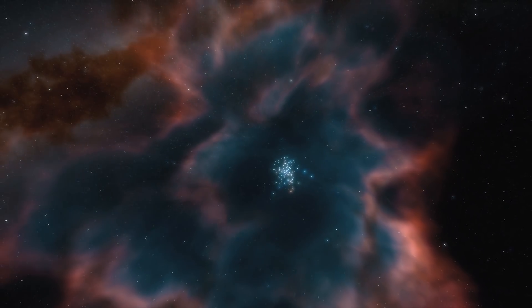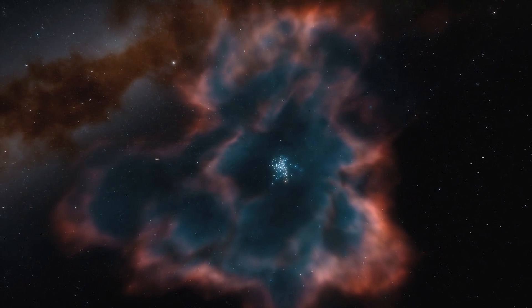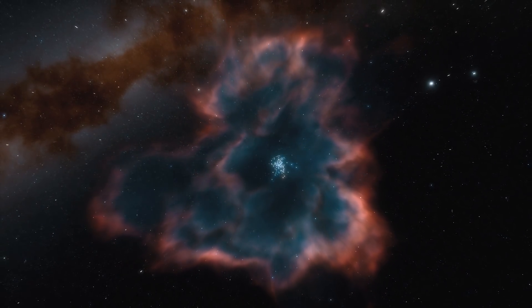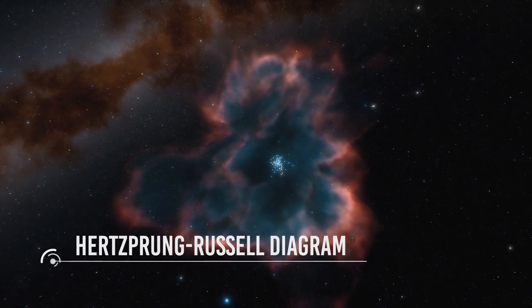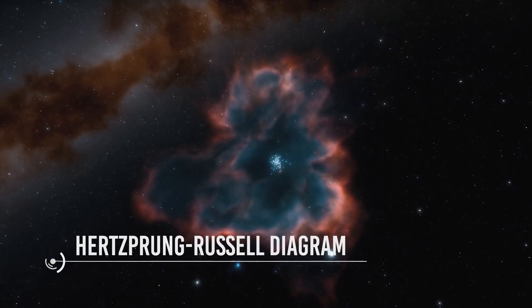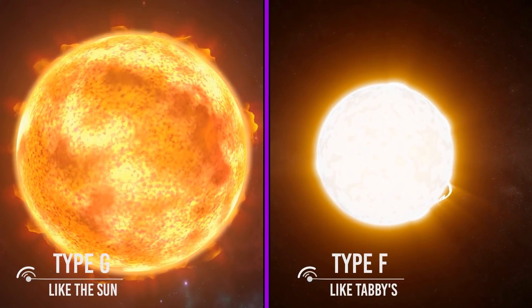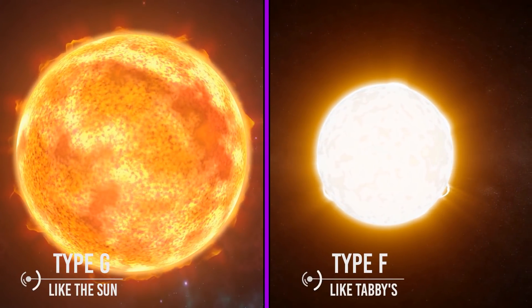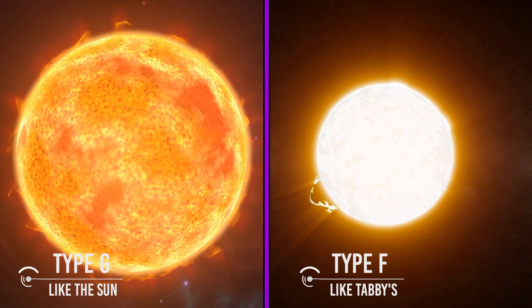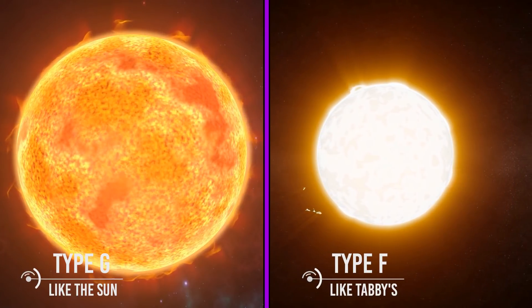But then there's weirdness number two. The candidate stars cluster not just in space, but also in type on the Hertzsprung-Russell diagram. This is quite strange. All of the stars are either Type F, like Tabby's, or Type G, like the Sun.